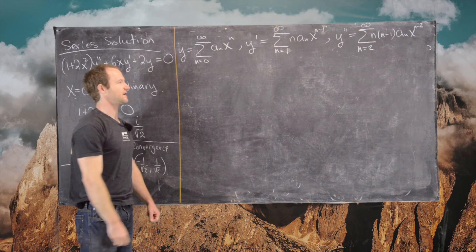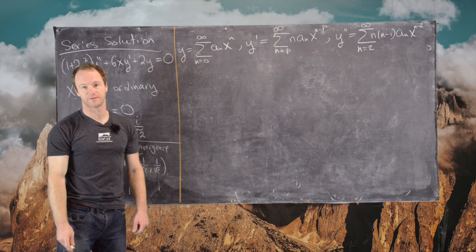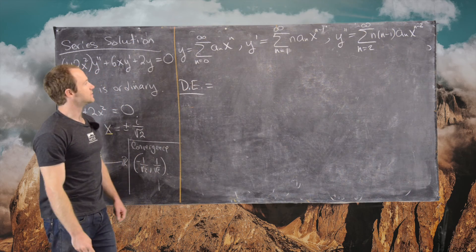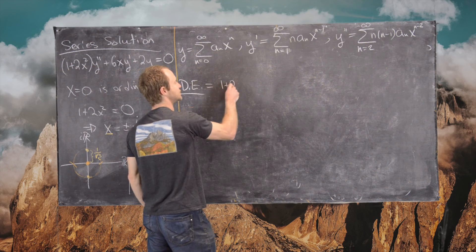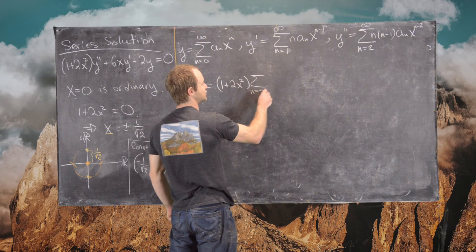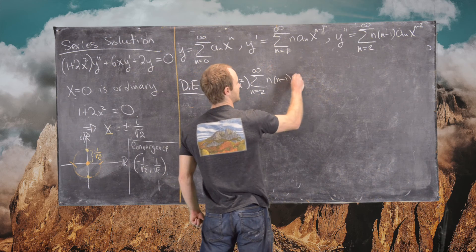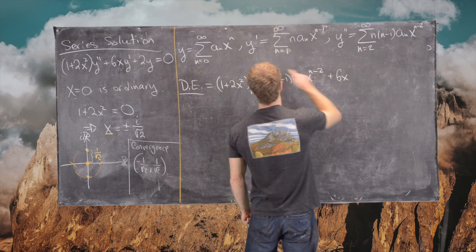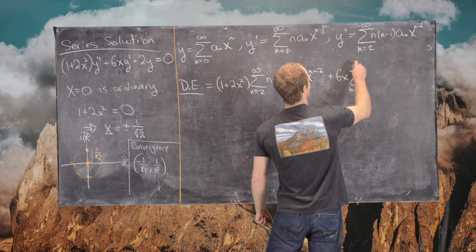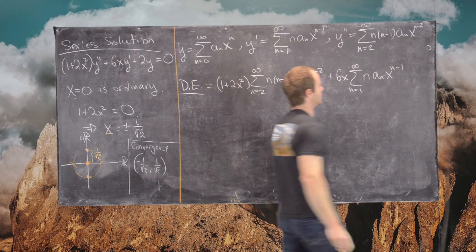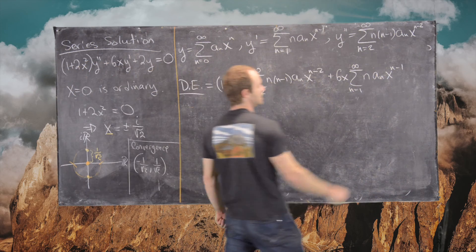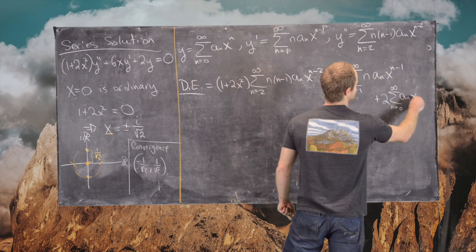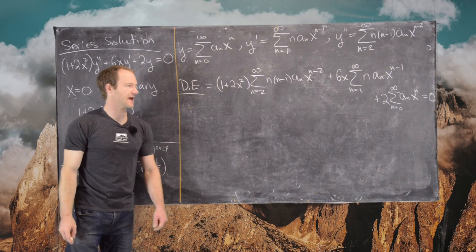This is our standard setup for finding power series solutions based at 0. Now we plug into the differential equation. That gives us: 1 plus 2x squared times the sum from n equals 2 to infinity of n(n minus 1) a sub n x to the n minus 2, plus 6x times the sum from n equals 1 to infinity of n a sub n x to the n minus 1, plus 2 times the sum from n equals 0 to infinity of a sub n x to the n, all equal to 0.